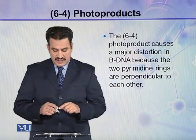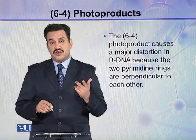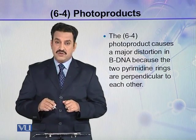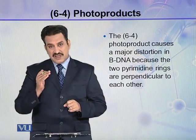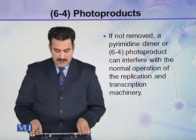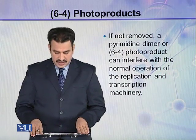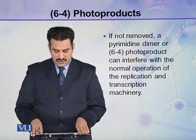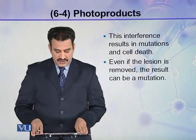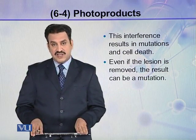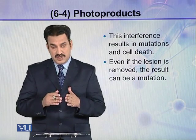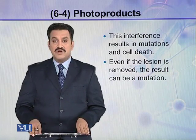The 6-4 photo product causes a major distortion, in contrast to the minor kink of about 30 degrees produced by CPD. If not removed, a pyrimidine dimer or a 6-4 photo product can interfere with the normal operation of the replication and transcription machinery. This interference results in mutations and cell death. Even if the lesion is removed, the result can still be a mutation.